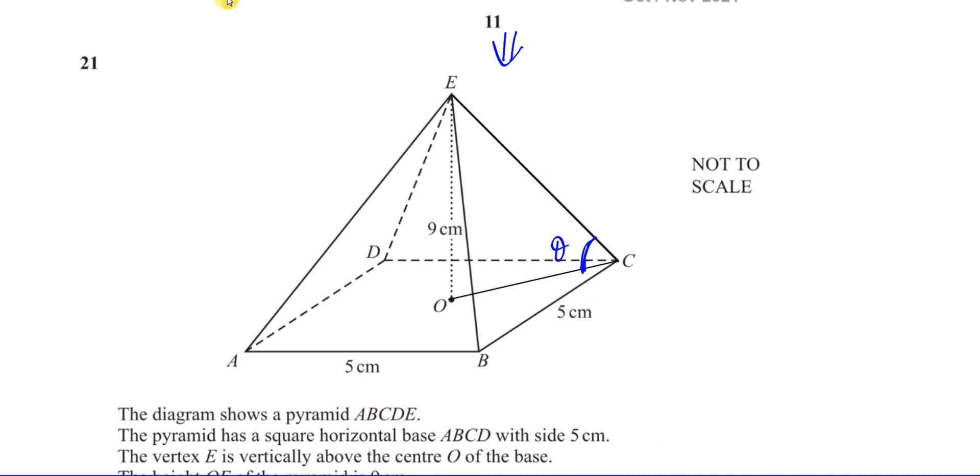Now, if I was to look at this from this angle over here, I will see in front of me a right angle triangle looking something like this. It would look like a right angle. This is a 3D figure, but this is vertical. This is horizontal. Horizontal base, vertical height. So that's the right angle at O. This is C. This is the angle we're looking for. And this is E, vertically above O.